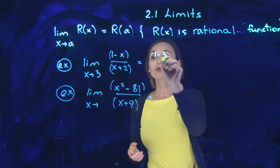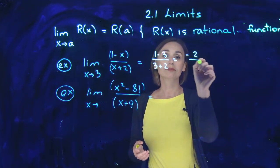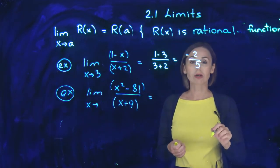1 minus 3 over 3 plus 2. In the top you have negative 2, in the bottom you have 5. That's your answer: negative 2 over 5.